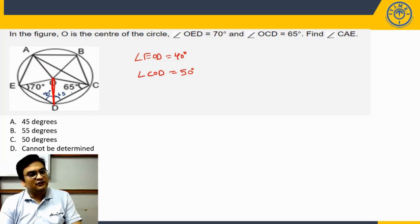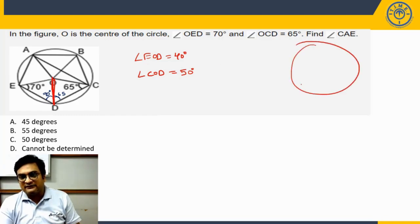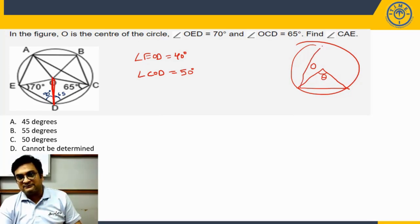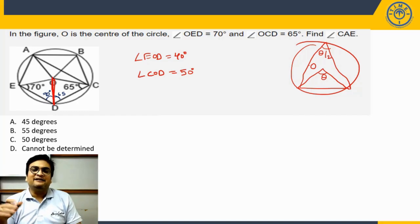The way we can get to the answer is notice that if you look at the angle subtended by this chord ED at the center, it is 40 degrees. If the angle subtended by a chord at the center is theta, then angle subtended by the same chord anywhere else on the circle on the same side will be theta by 2. Conversely, if angle subtended by a chord or an arc anywhere on the circle is theta, angle at the center will be twice that, 2 theta.